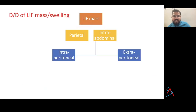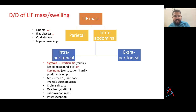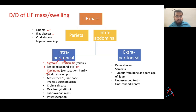For differential diagnosis of left iliac fossa mass: parietal swellings include lipoma, abscess, and inguinal swellings. Intraperitoneal causes include sigmoid-related pathology — diverticulitis (mimics left-sided appendicitis) or carcinoma producing constipation and a lump. Overall, the causes are similar to the right iliac fossa except that cecum and appendix-related swellings are absent on the left side — keep basic anatomy in mind.